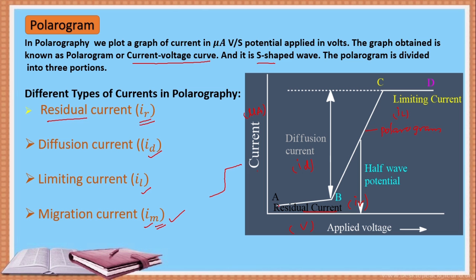From point A to B, we can call it residual current. From B to C, we can call it diffusion current. From C to D, we can call it limiting current. Migration current refers to the migration of metal ions towards the dropping mercury electrode.